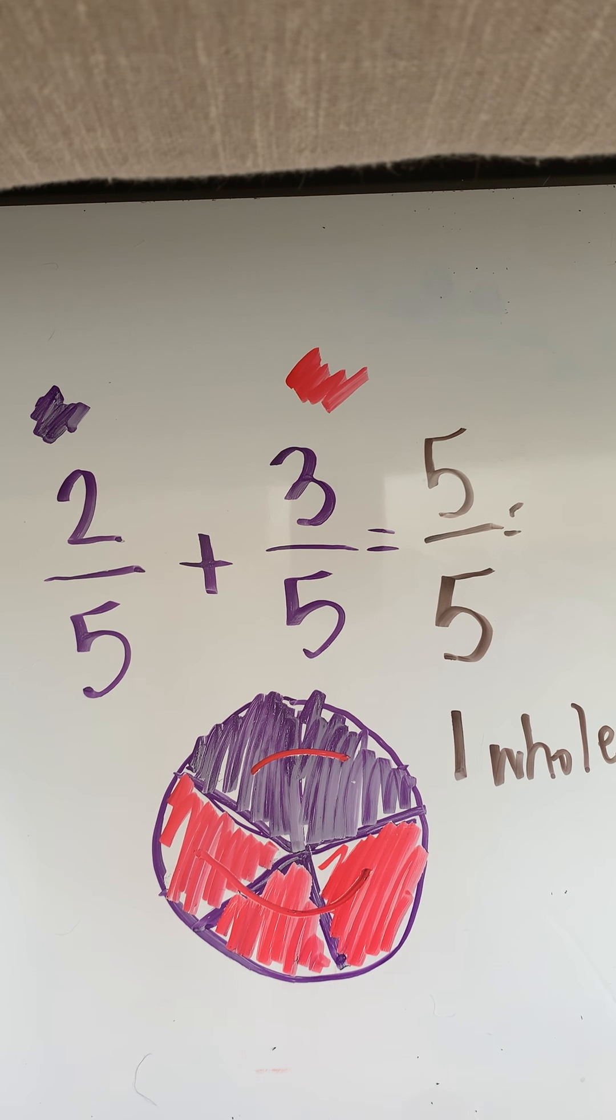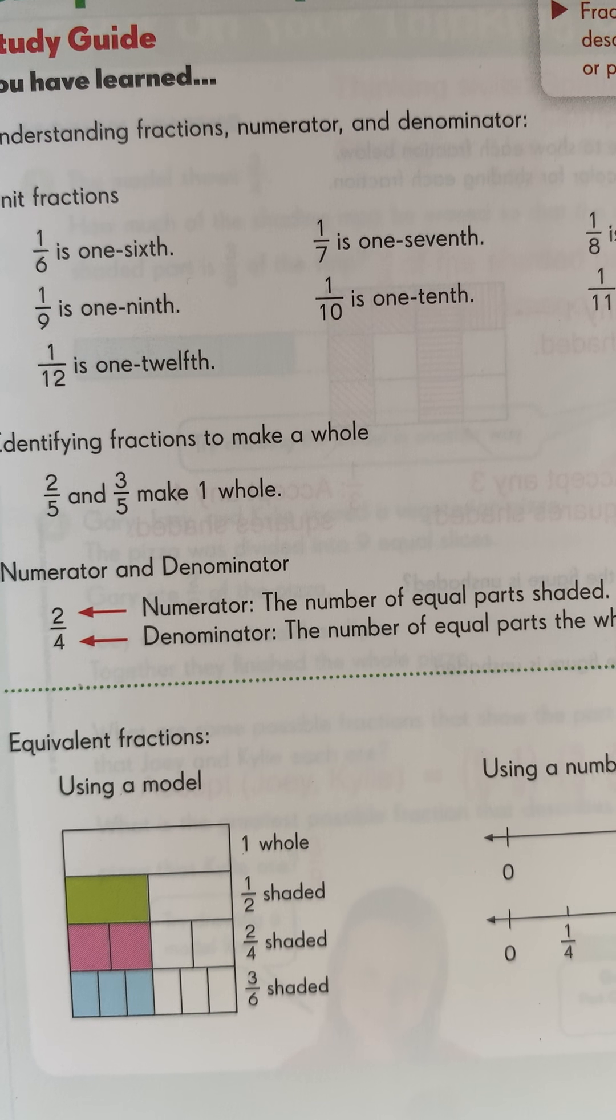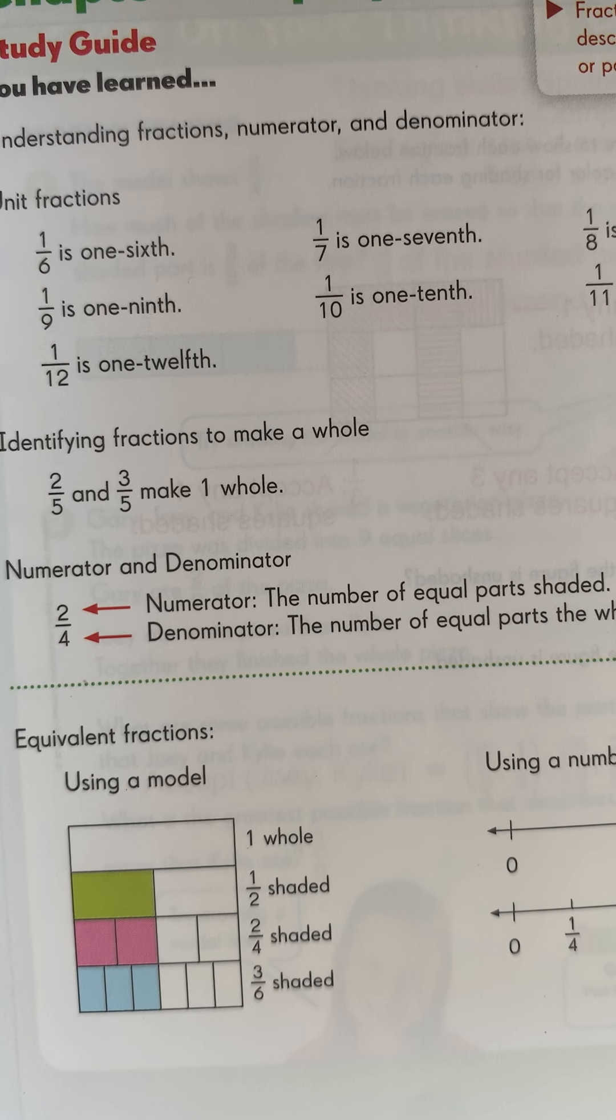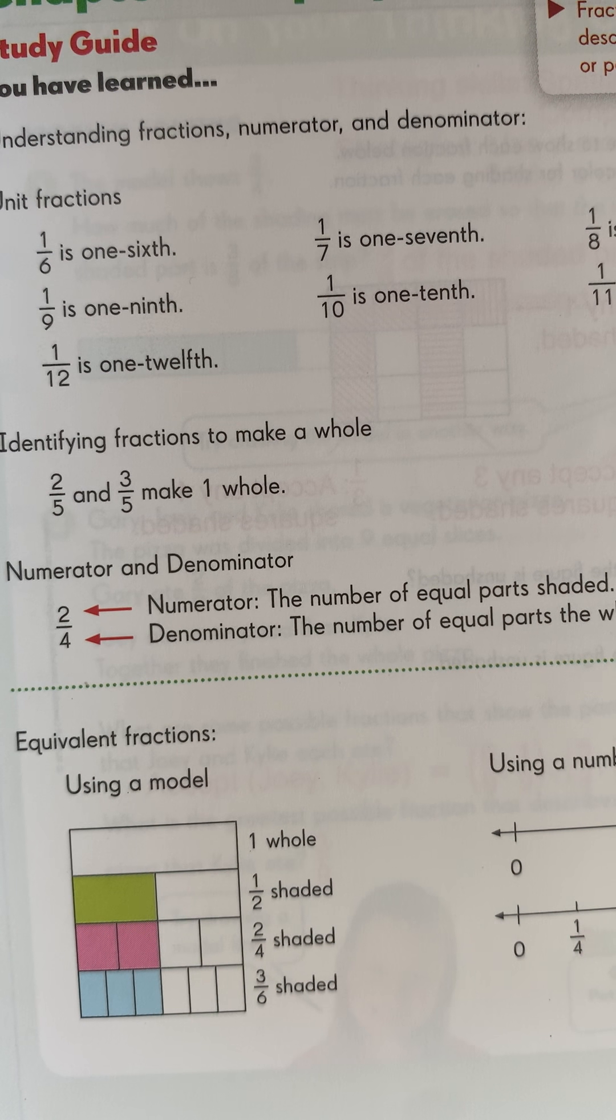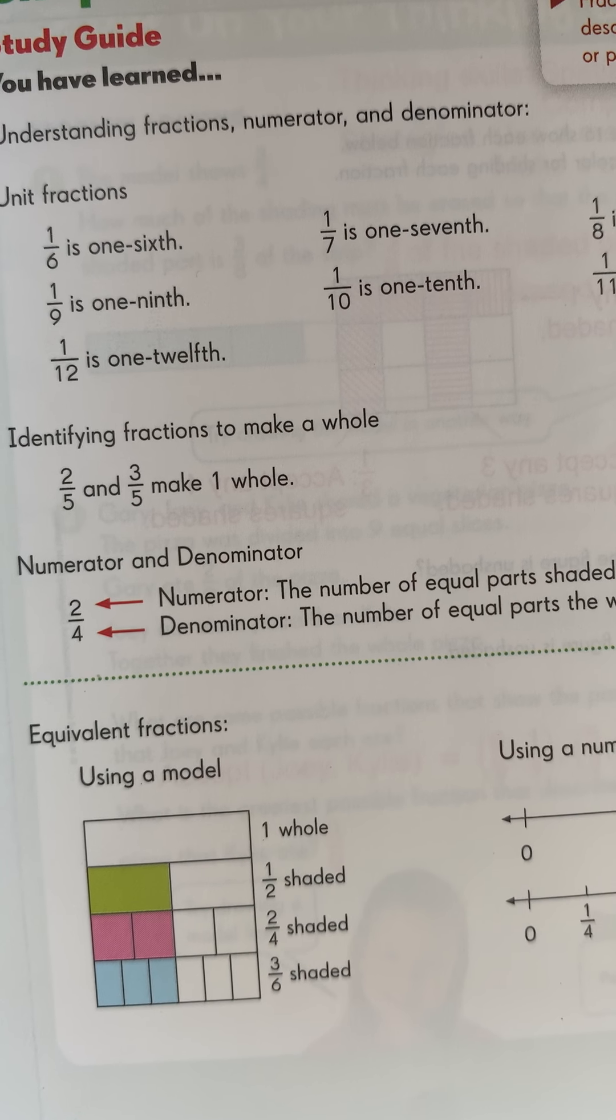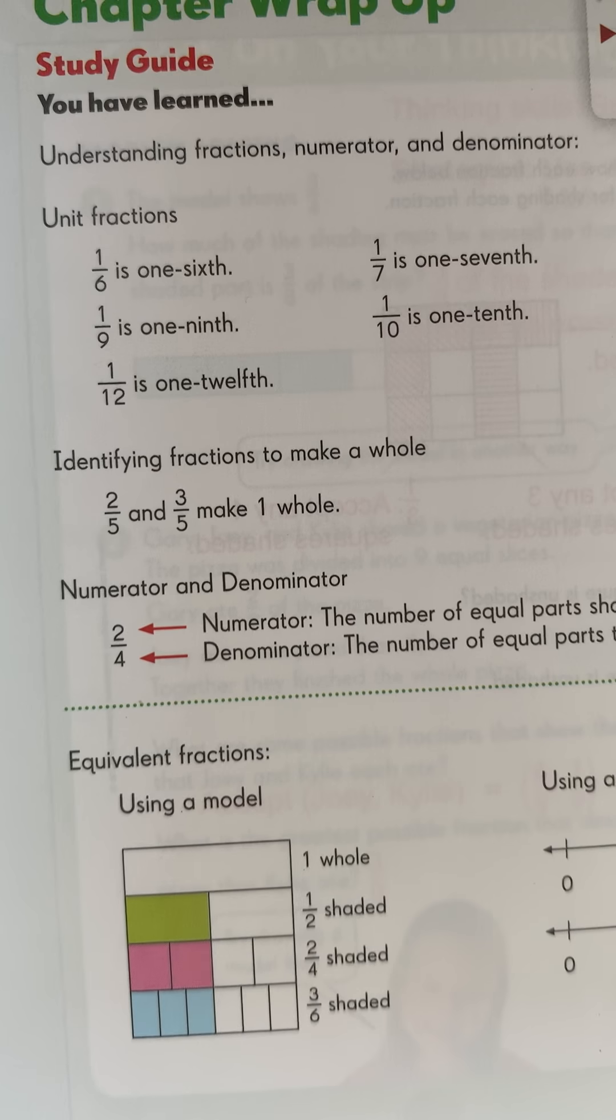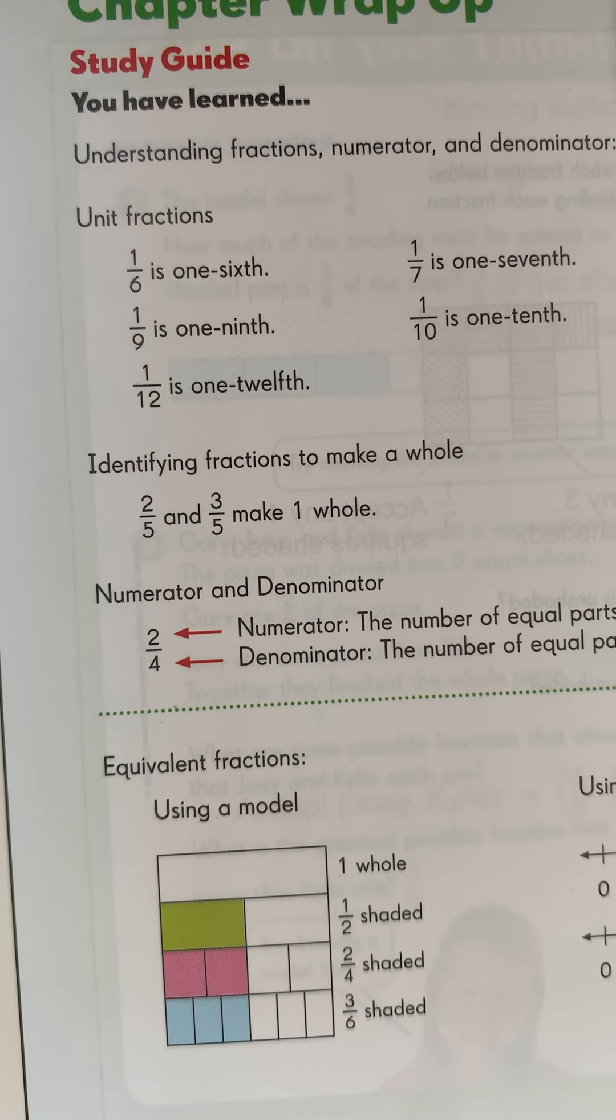All right guys, let's go ahead and take a look at the next part of our chapter wrap up. They just want you to get used to our terms that you guys already know. That's a numerator, the number of equal parts shaded, and your denominator, which is on the bottom. Everybody say denominator. Remember denominator, nominator, nominator down. The number of equal parts the whole is divided into.